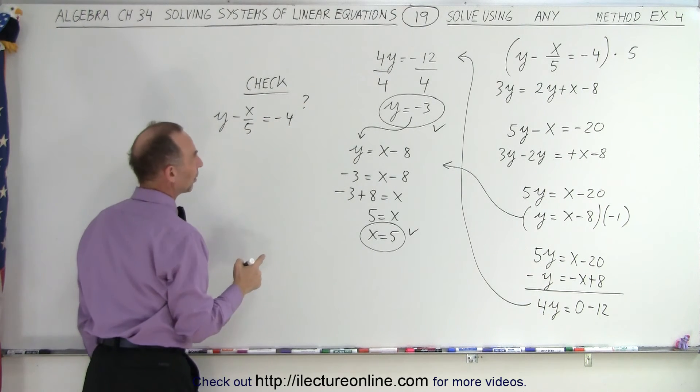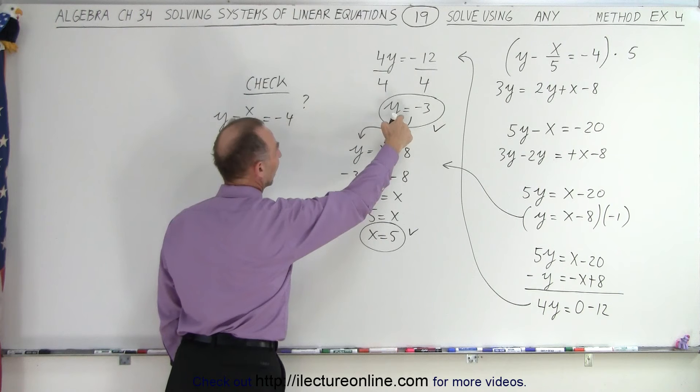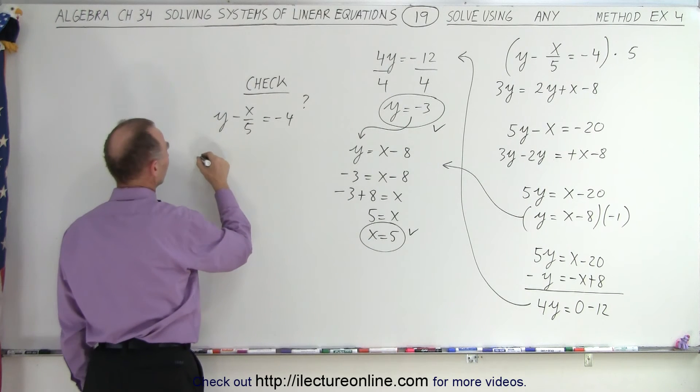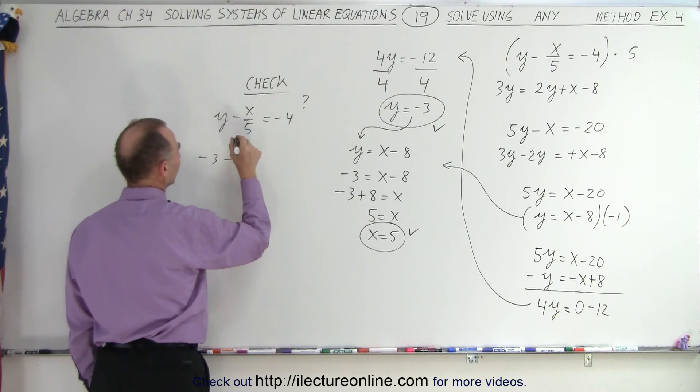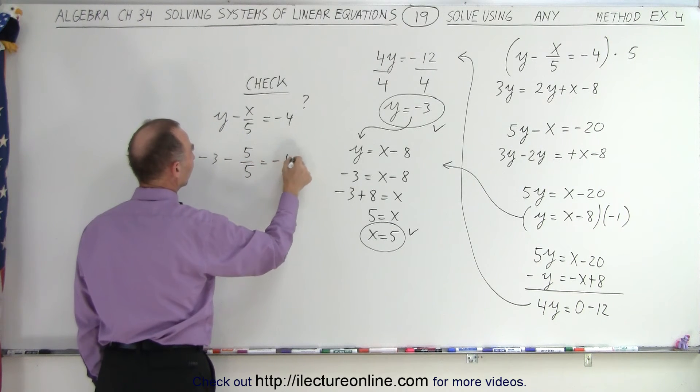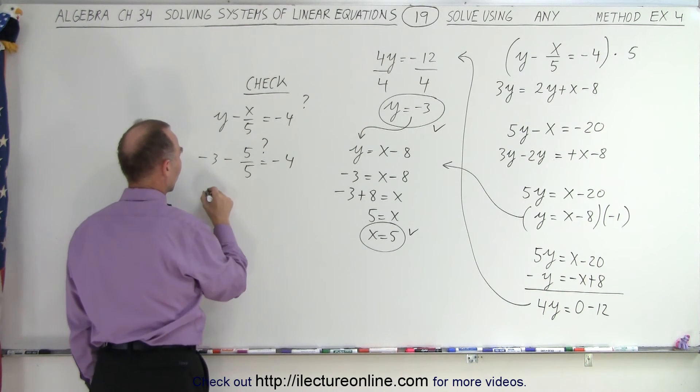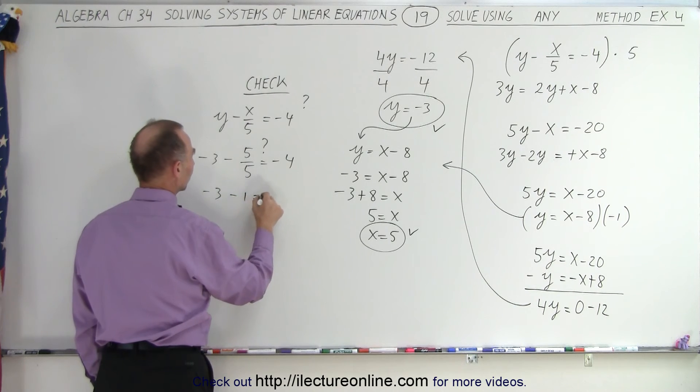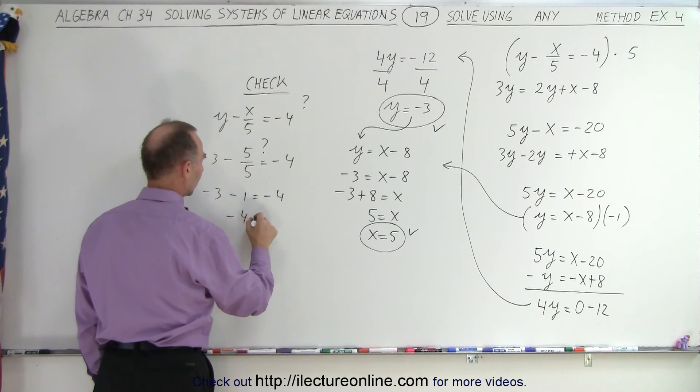So I'm going to write the equation y minus x over 5 equals negative 4, question mark, when I plug in x equals 5 and y equals negative 3. So negative 3 minus x is a positive 5, 5 over 5 equals negative 4, question mark. So we have negative 3 minus 1 equals negative 4, or negative 4 equals negative 4.